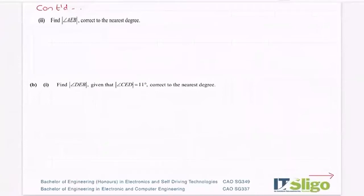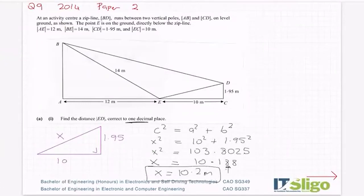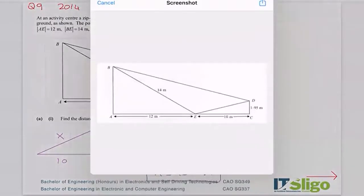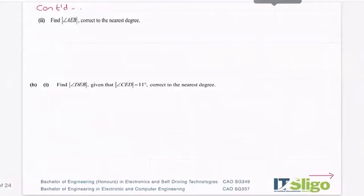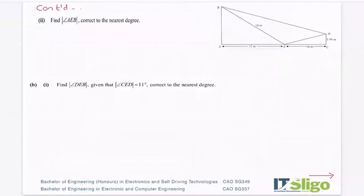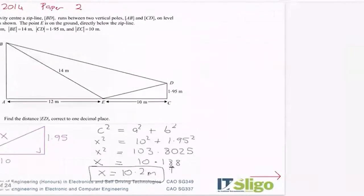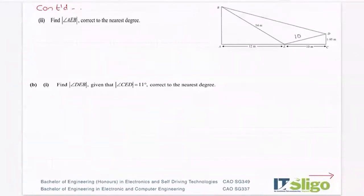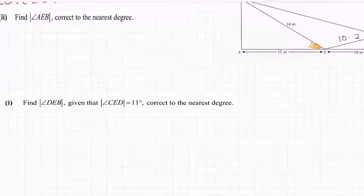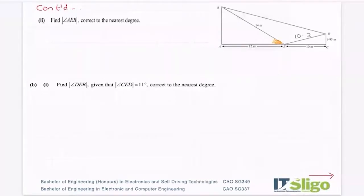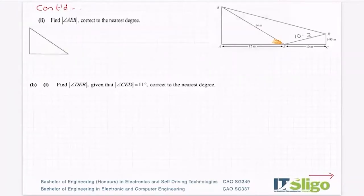The next question says: find the angle AEB correct to the nearest degree. I'm going to copy the diagram so we don't have to keep flicking back and forth. ED we found to be 10.2. The angle AEB — it's always the letter in the middle when you're looking for the angle. I'm now in a different triangle, so I'll draw that triangle out so I don't get distracted by the diagram. Filling in the dimensions: I have 14, I have 12, and I need this angle.